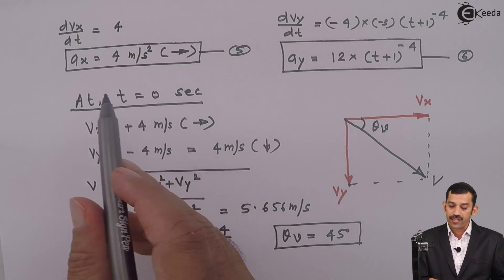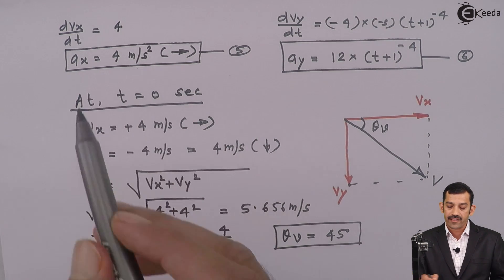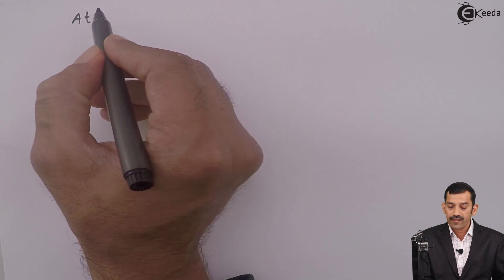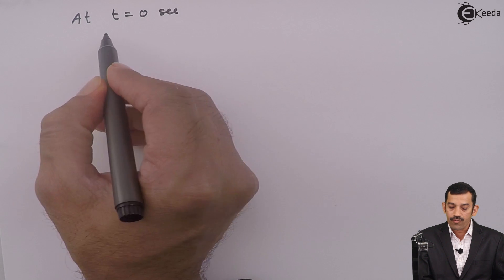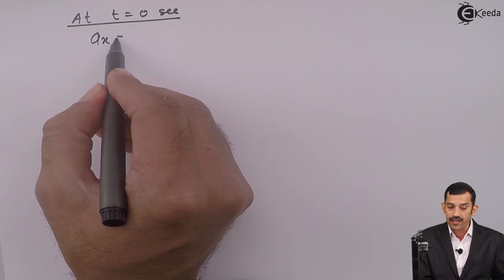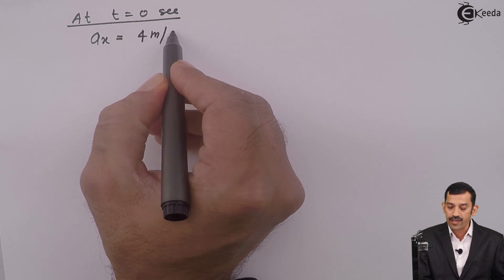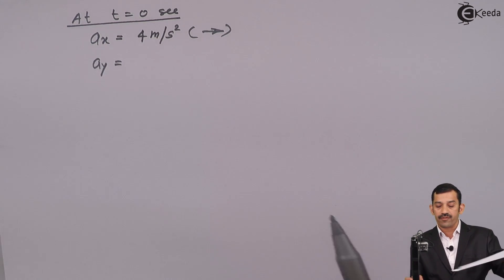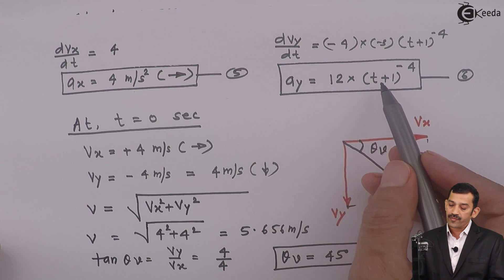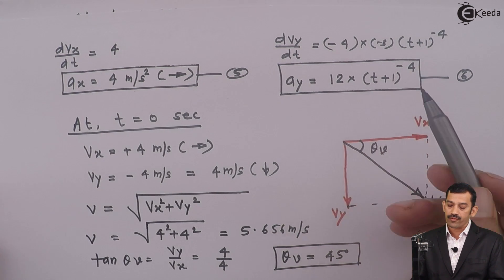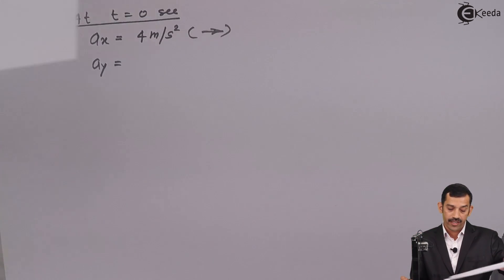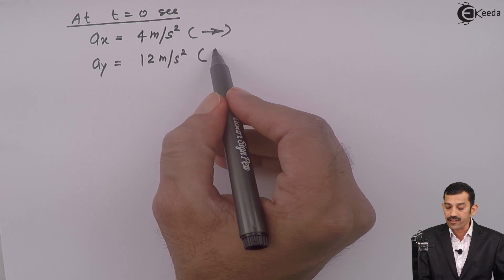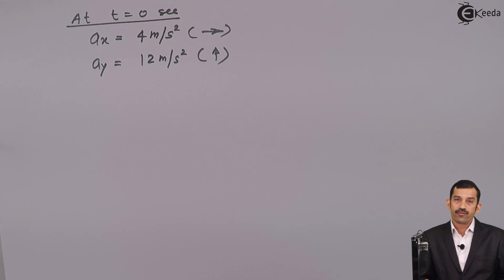Similarly, at t equal to 0 second, we find ax and ay. Since ax is independent of time t, ax at t = 0 remains 4 meters per second squared. For ay, substituting t = 0 in the equation of ay, which is 12(t + 1) raised to minus 4: we get 12 into 1 raised to minus 4, and since 1 raised to minus 4 equals 1, ay = 12 meters per second squared, positive, meaning upward direction. So ax is rightward and ay is upward.